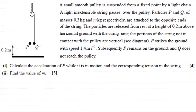Hi there, now in this question we're given a small smooth pulley which is suspended from a fixed point by a light chain and a light inextensible string passes over the pulley. Particles P and Q of masses 0.3 kilograms and m kilograms respectively are attached to the opposite ends of the string.